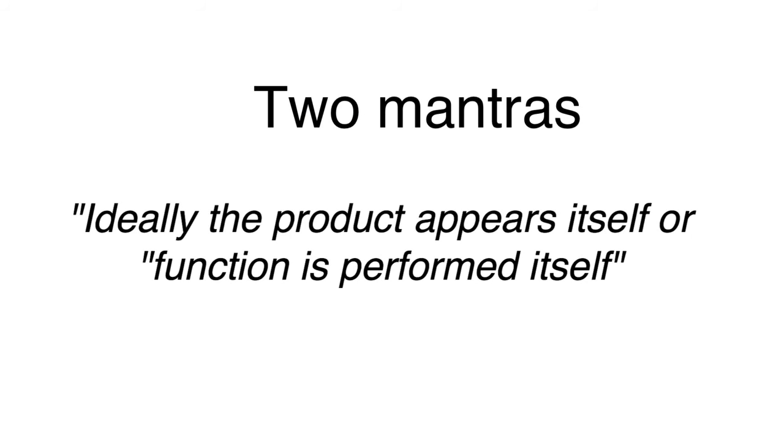I would like to share two mantras — two formulations of the ideal final result that I find very constructive. The first is a general definition of ideality: 'Ideally, the product appears itself.' There is no function anymore — there is a product. You define the function by the product, because the function is performed well when the product appears. The second word I like even better is 'itself.' Itselfness is a great concept. Ideality means itselfness — everything happens itself, and the function is performed itself without a technical system.